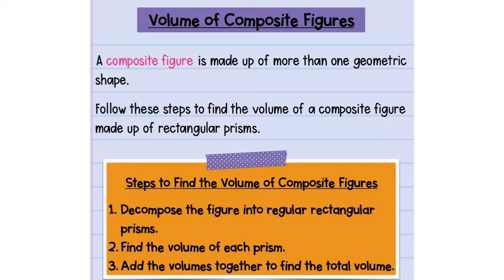Today we're talking about the volume of composite figures, but we have to understand what the word composite means. Composite is the makeup of more than one thing. When we're talking about a composite figure, we're talking about the makeup of more than one geometric shape. We've been looking just at single rectangular prisms and now we're going to composite them together.